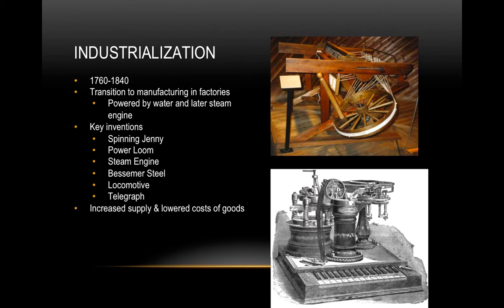The steam engine becomes a major power source, but it was first used to pump water out of mine shafts, because people were digging deeper and deeper for coal and iron and hitting the water table. They then found they could use it to power the factories, allowing factories to be built anywhere and not just along a river. Along with this, the Bessemer steel process creates new steel that is much cheaper and easier to make.